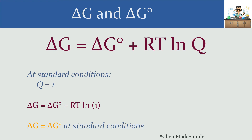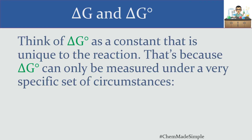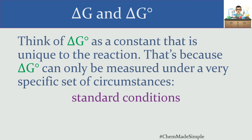This shouldn't surprise you: delta G naught is the value of delta G when we measure the reaction at standard conditions. Think about how rarely a reaction reaches equilibrium at exactly 298 K, 1 atm, and all concentrations at 1 molar — those are very unrealistic conditions for establishing equilibrium. So think of delta G naught as a constant that's unique to that reaction. Whatever value we calculate under those special circumstances measures the direction of the reaction under standard conditions.